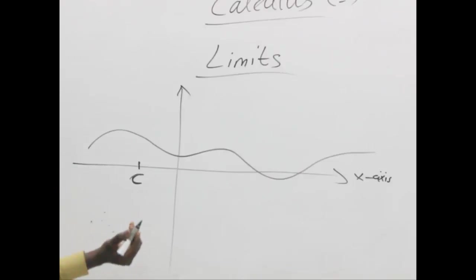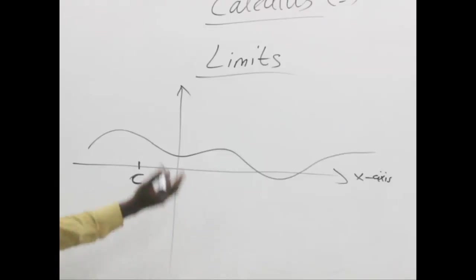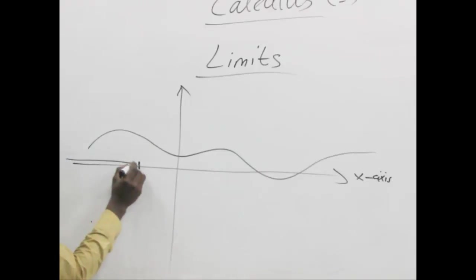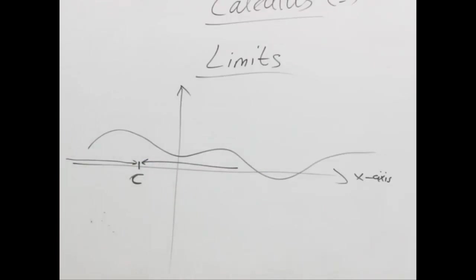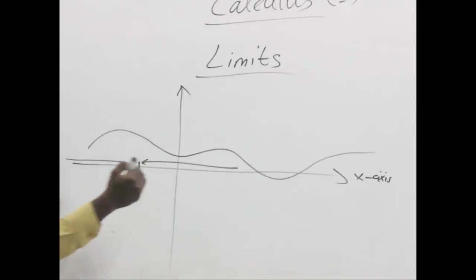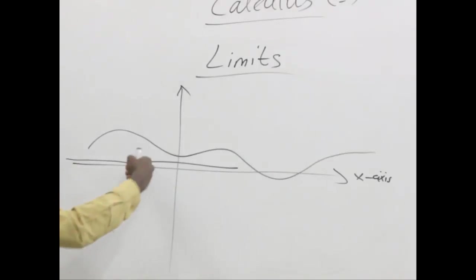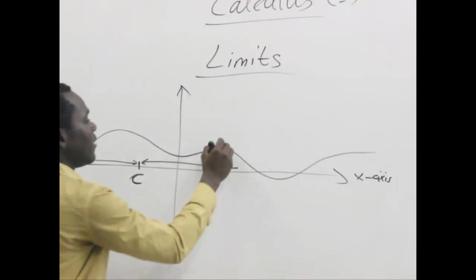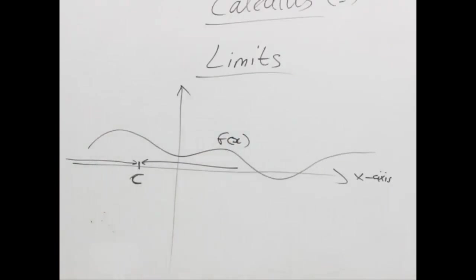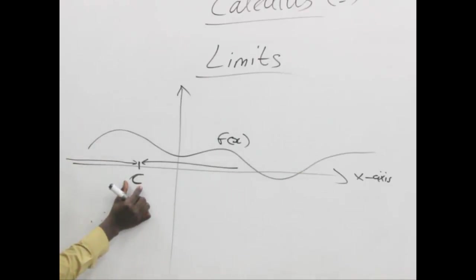As the x values are approaching c — coming towards c from the left direction and from the right direction — what happens to the function or the graph? We don't come to c exactly; we are just approaching it. What happens when we are moving towards c from the right and from the left? How does f(x) behave? The way the graph behaves as all values of x approach a particular number c on the x-axis — that is what we are interested in.